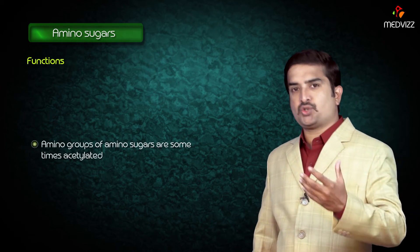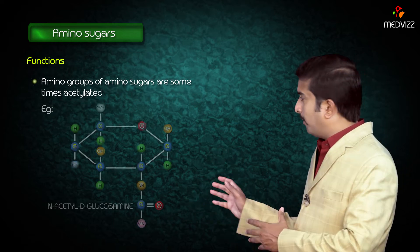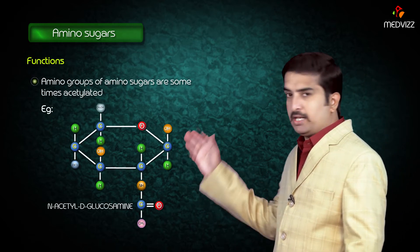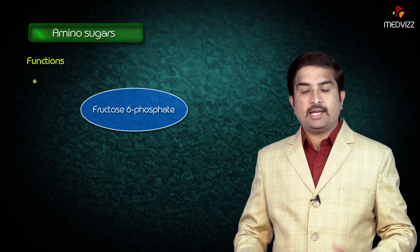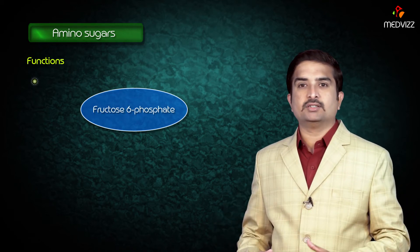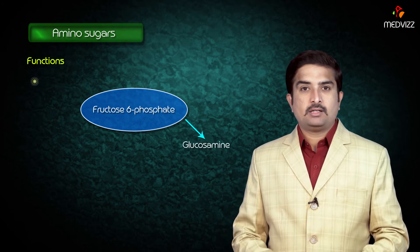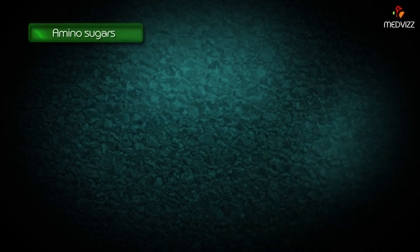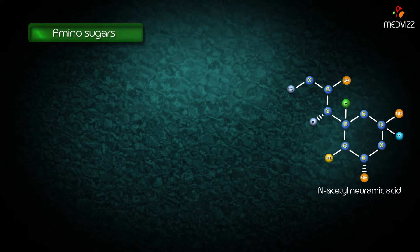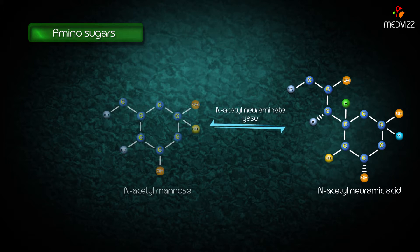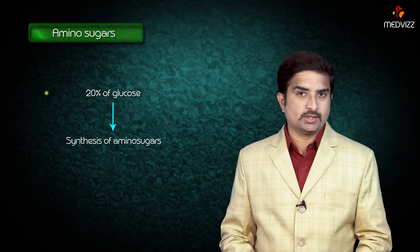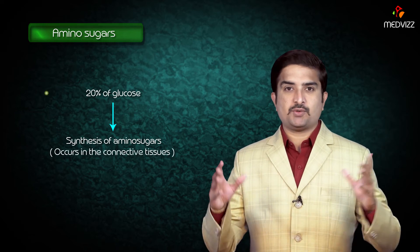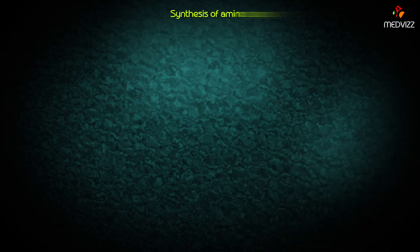The amino groups of amino sugars are sometimes acetylated to form N-acetyl D-glucosamine. Fructose-6-phosphate is the major substrate or precursor for the synthesis of glucosamine, N-acetylgalactosamine, and N-acetylneuraminic acid. N-acetylneuraminic acid is a derivative of N-acetylmannose and pyruvic acid. About 20% of glucose is utilized for the synthesis of amino sugars, which mostly occurs in connective tissues.